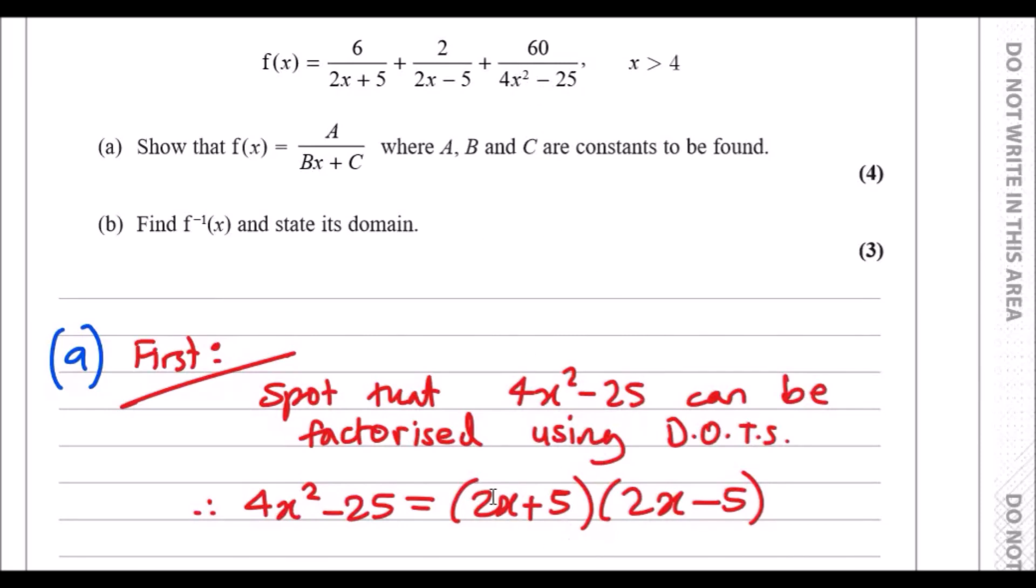I call the dots here, and in fact 4x squared minus 25, if you use the difference of two squares, the way it works is that you square root 4x squared which will give you 2x on both, and square root 25 will give you 5 on both with a plus minus sign attached.